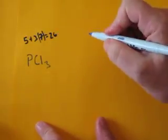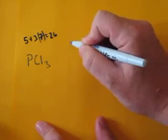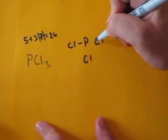Next step, you're going to draw the skeleton of this molecule. So you put your phosphorus surrounded by 3 chlorines and connect them with a bond.